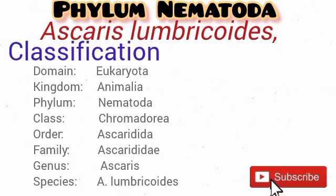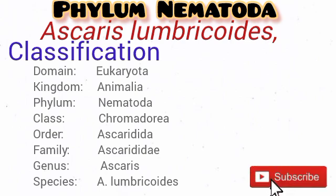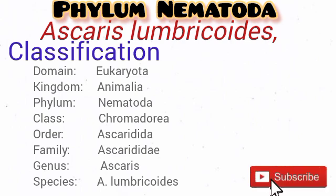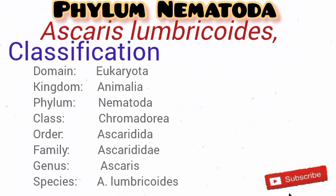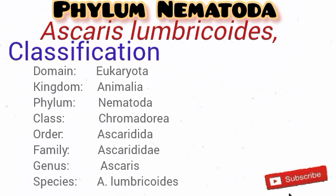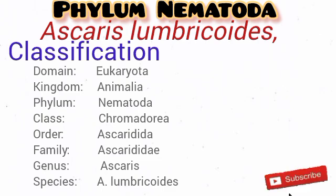The taxonomy of Ascaris lubricoides: Kingdom — Animalia; Phylum — Nematoda; Class — Chromadorea; Order — Ascaridida; Family — Ascarididae; Genus — Ascaris; Species — lubricoides.